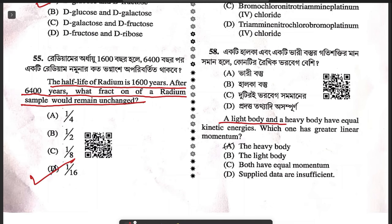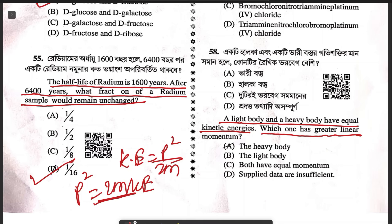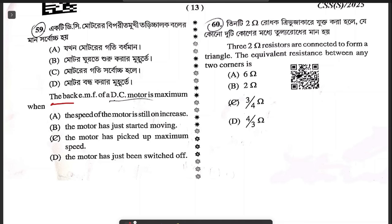Question 58: a light body and a heavy body have equal kinetic energy — which has greater linear momentum? Since KE = P²/2m, or P² = 2m × KE, momentum is directly related to mass. So the heavy body has greater momentum. Question 59: the back EMF of a DC motor is maximum when the motor speed has reached its maximum speed. Answer C.